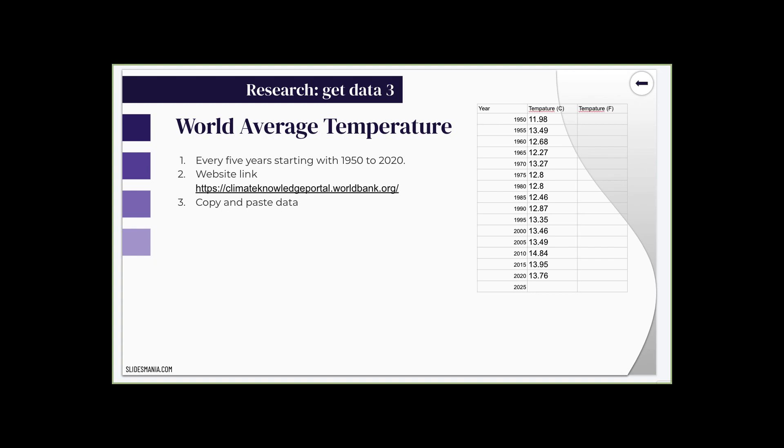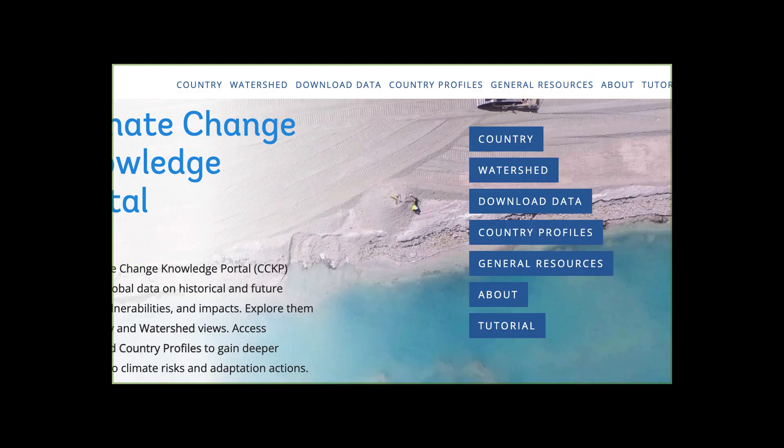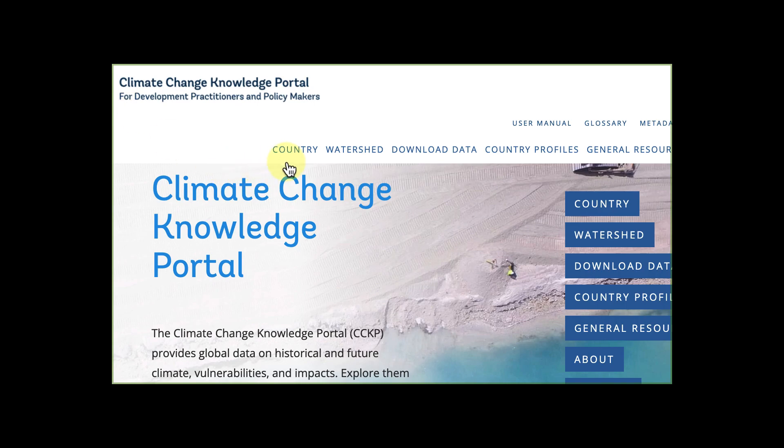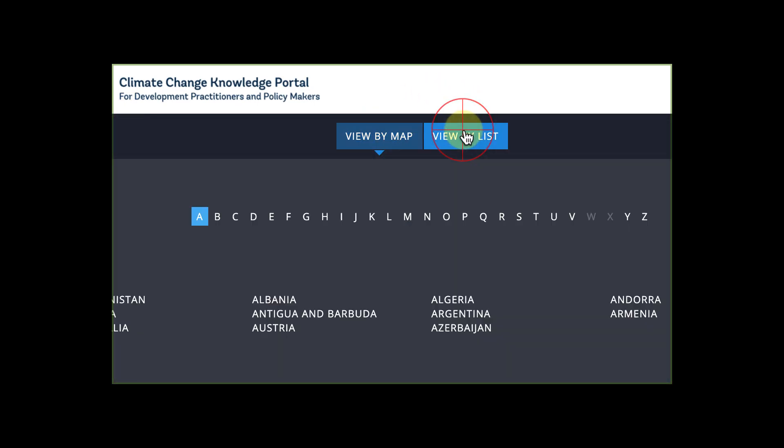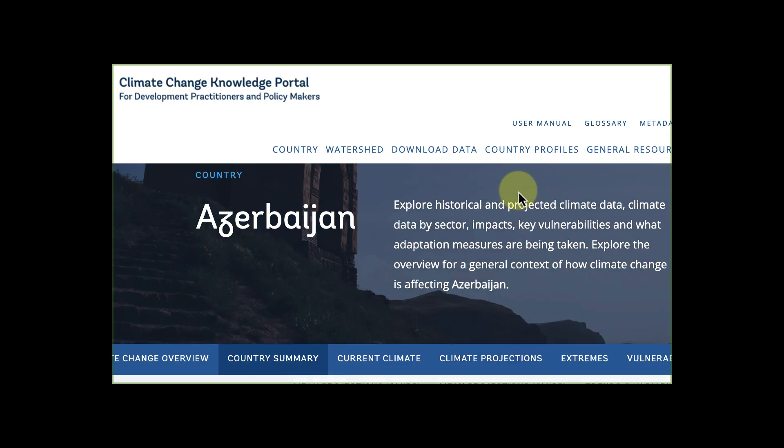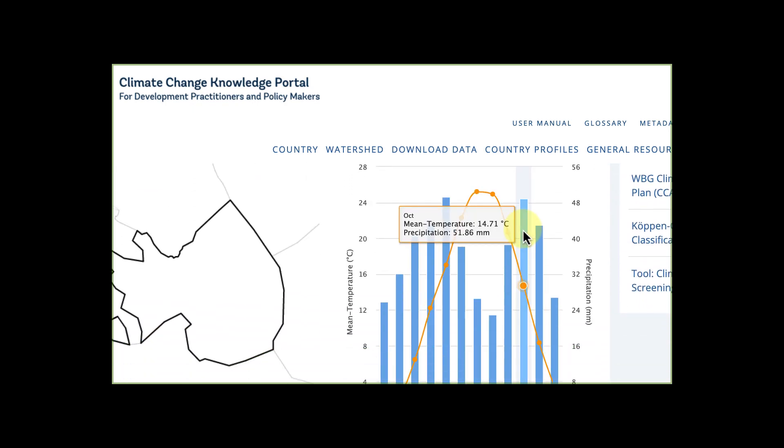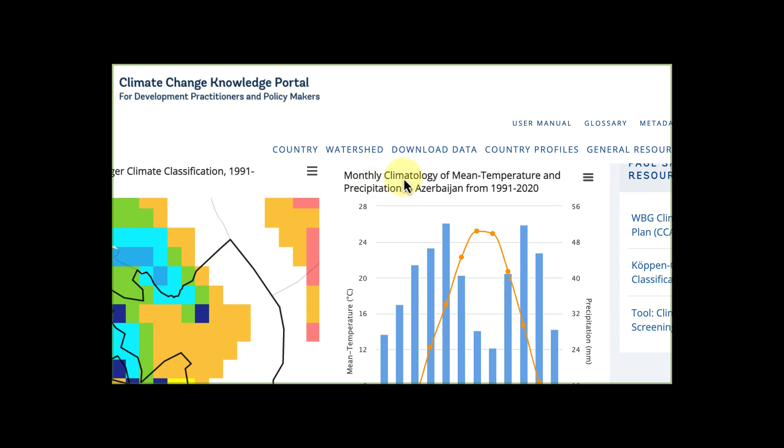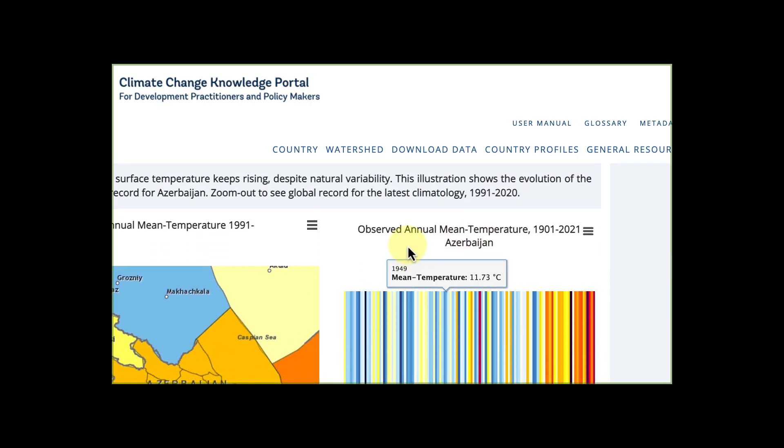Number three, the world average temperatures. We're going to get every five years starting with 1950 to 2020. And here is a website. And then we're going to have to manually copy and paste the data. Okay, so here I'm on this website. You can go to your country. Buy a list. Mine's A and then mine's Azerbaijan. And then you're going to scroll down. This one's close. Monthly climatology of mean temperatures. But observed annual mean temperature from 1901 to 2021.